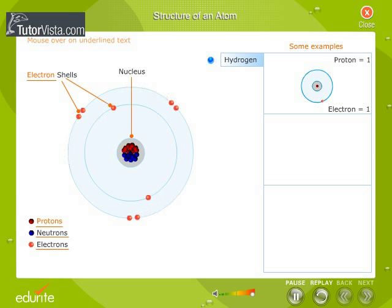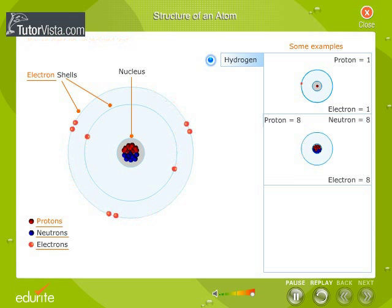But if the number of protons, electrons and neutrons are 8 each, then we have an atom of oxygen.